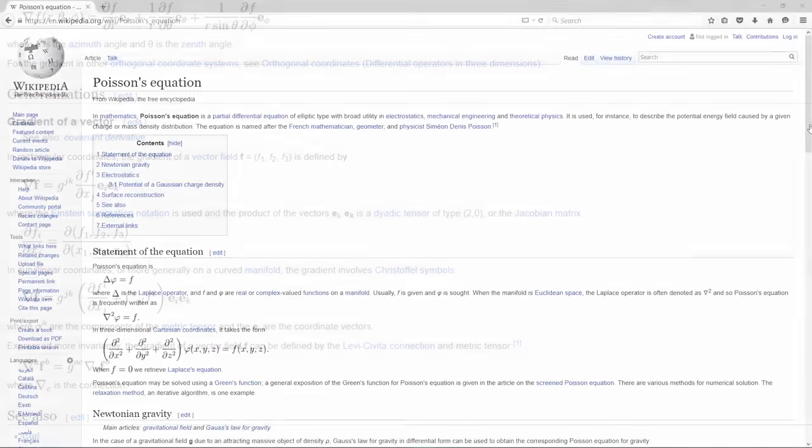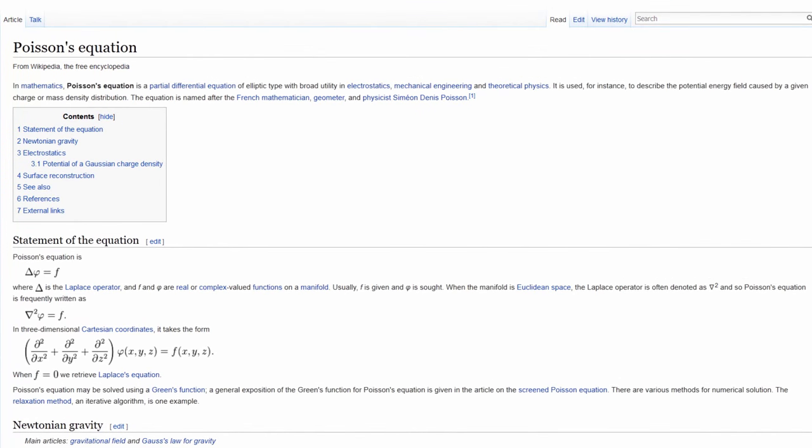Now let's proceed to Poisson's equation. In mathematics, Poisson's equation is a partial differential equation of elliptic type with broad utility in electrostatics, mechanical engineering, and theoretical physics. It is used, for instance, to describe the potential energy field caused by a given charge or mass density distribution.